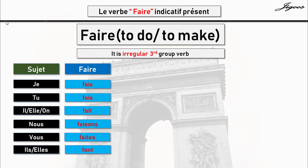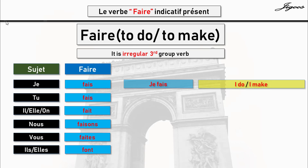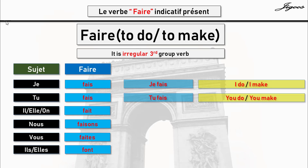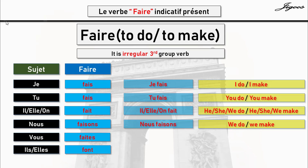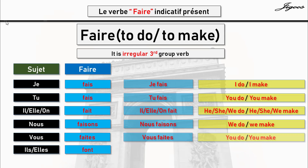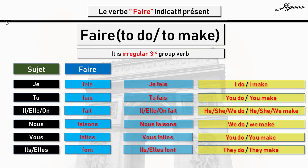Now, let's look at it again. Je fais means I do or I make. Tu fais means you do or you make. Il, elle, on fait means he, she, or one does or makes. Nous faisons means we do or we make. Vous faites means you do or you make. Ils, elles font means they do or they make.